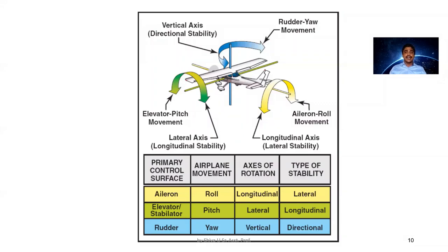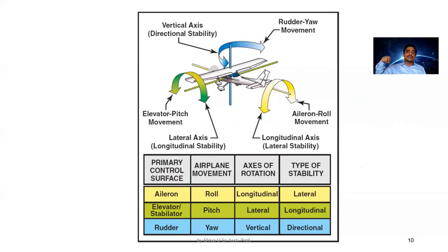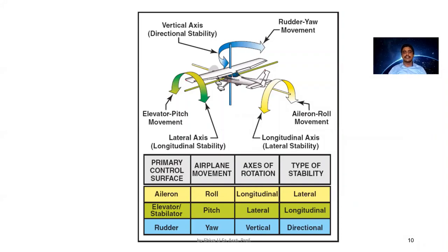As far as the aileron rolling moment is concerned, it is about the longitudinal axis that the rolling moment is achieved. The longitudinal axis runs from the nose to the tail of the aircraft — that is the axis about which rolling rotation is made.